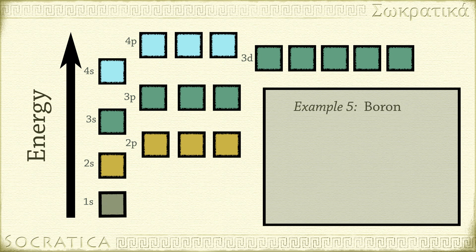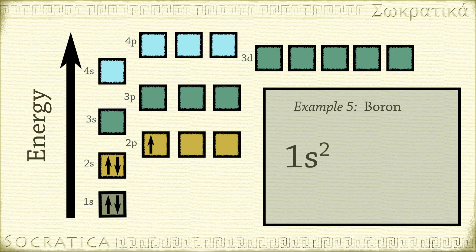Next comes boron, with five electrons. We're now starting to fill in the 2p subshell. p subshells have three orbitals — px, py, and pz — which can each hold two electrons, for a total of six electrons. We put the first electron in 2px. The electron configuration of boron is written as 1s2 2s2 2p1.